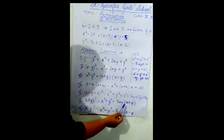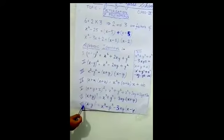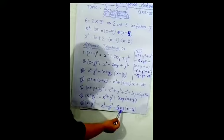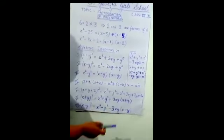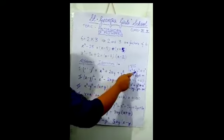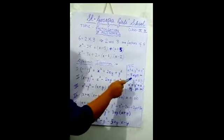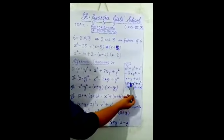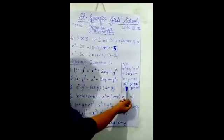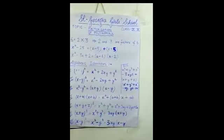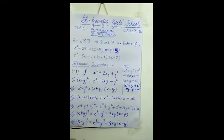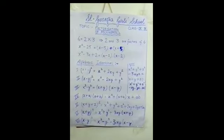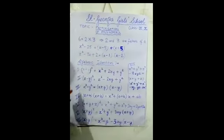The sixth identity: (x plus y) whole cube equals x cubed plus y cubed plus 3xy into (x plus y). The seventh identity: (x minus y) whole cube equals x cubed minus y cubed minus 3xy into (x minus y). The eighth identity: x cubed plus y cubed plus z cubed minus 3xyz. These are the algebraic identities — you can find them in your book.